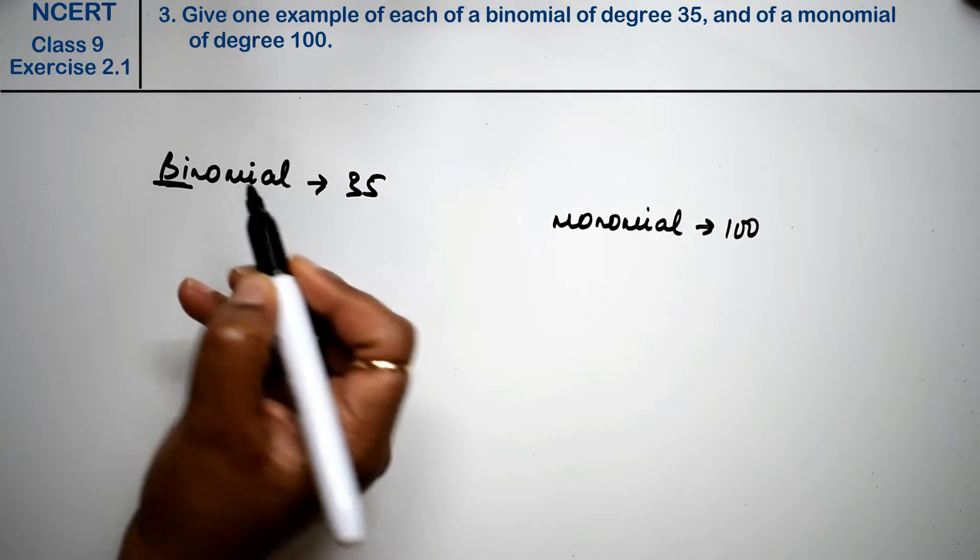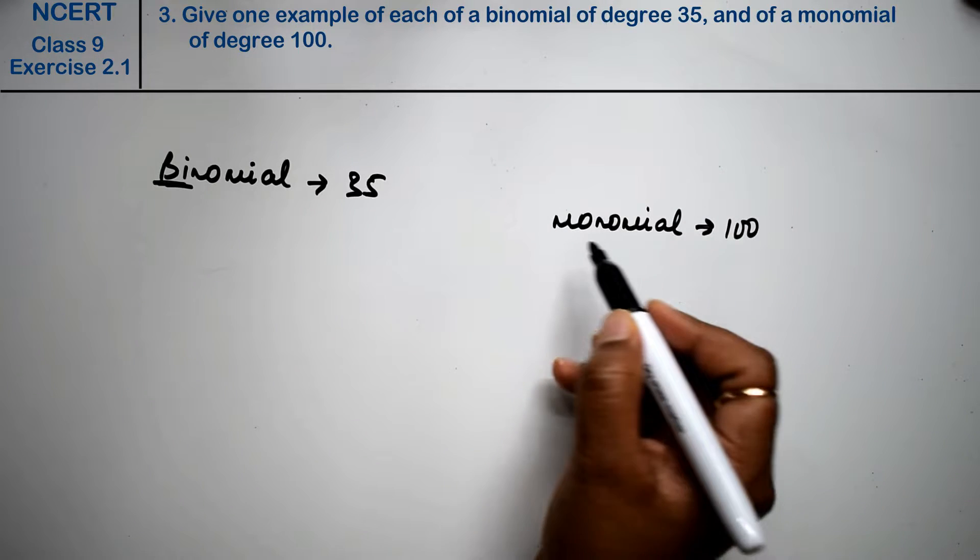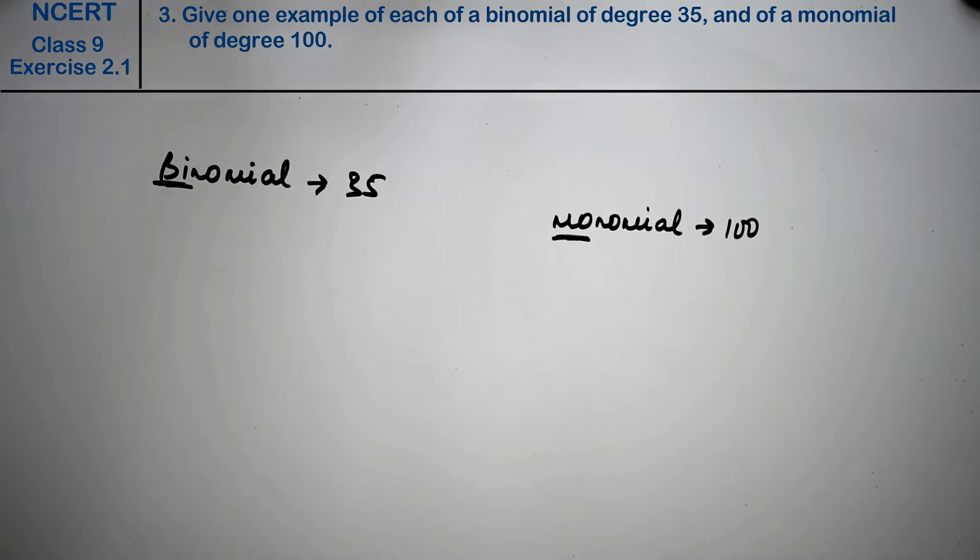Bi means two, so there are two terms. Monomial means one, so there is one term.